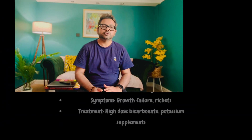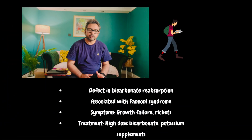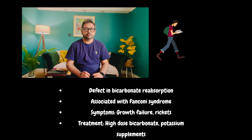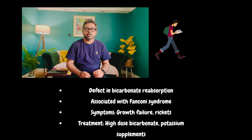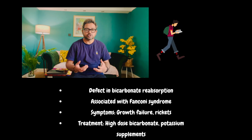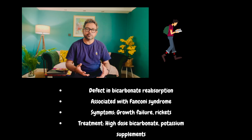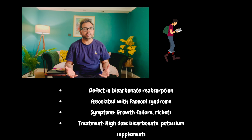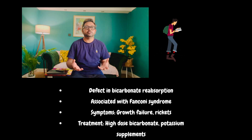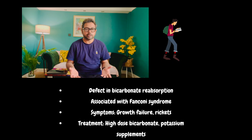The next variety of renal tubular acidosis is type 2. There is a pathology of reabsorption of bicarbonate. For that reason, there is increased secretion of bicarbonate. As a result of that, there is acidosis and it is associated with Fanconi syndrome.